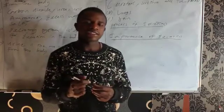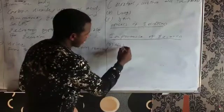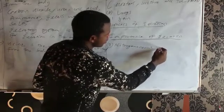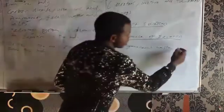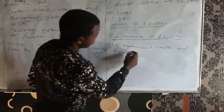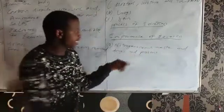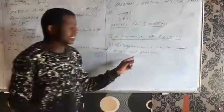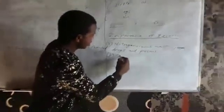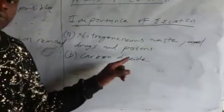We are going to look at some of the waste products. The first waste products are the nitrogenous waste. Nitrogenous waste, drugs, and poisons are removed by the kidney. Then we have carbon dioxide, which is removed from the lungs when we breathe out.